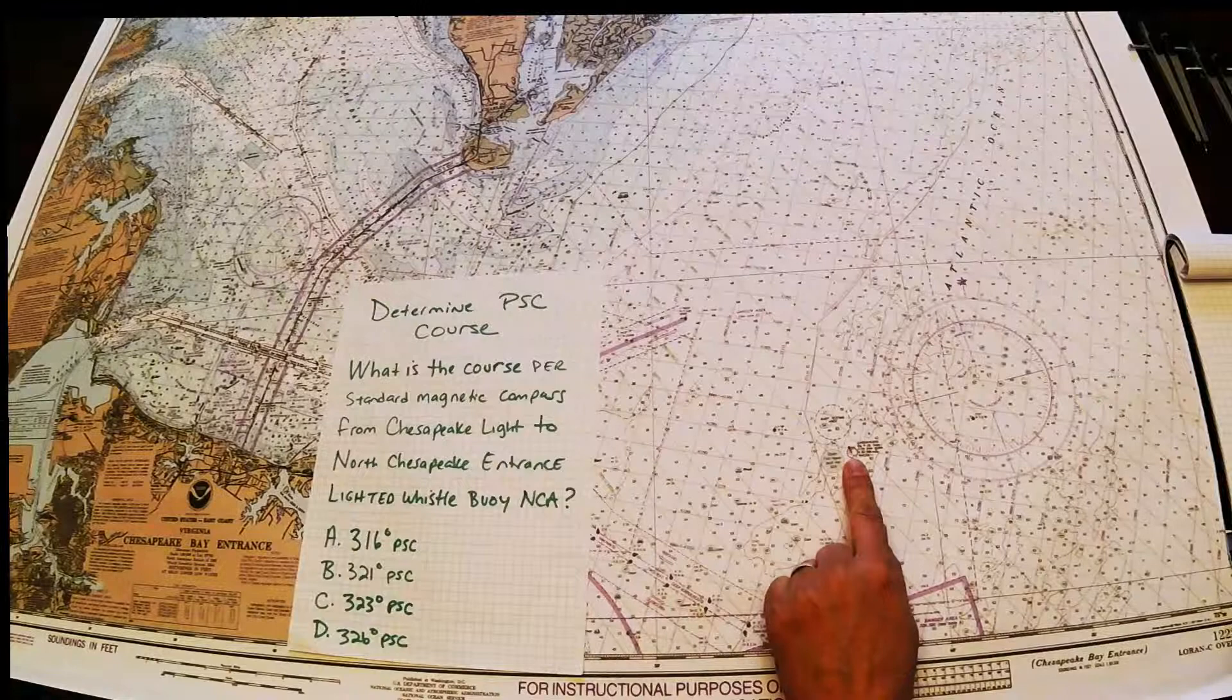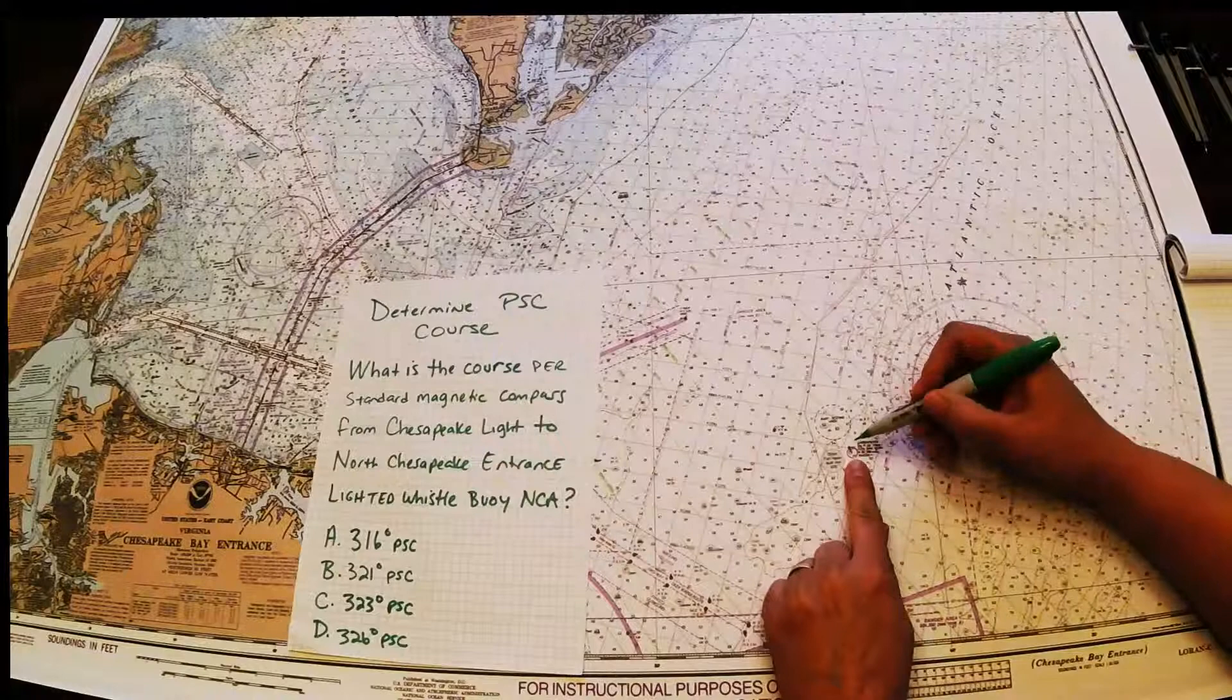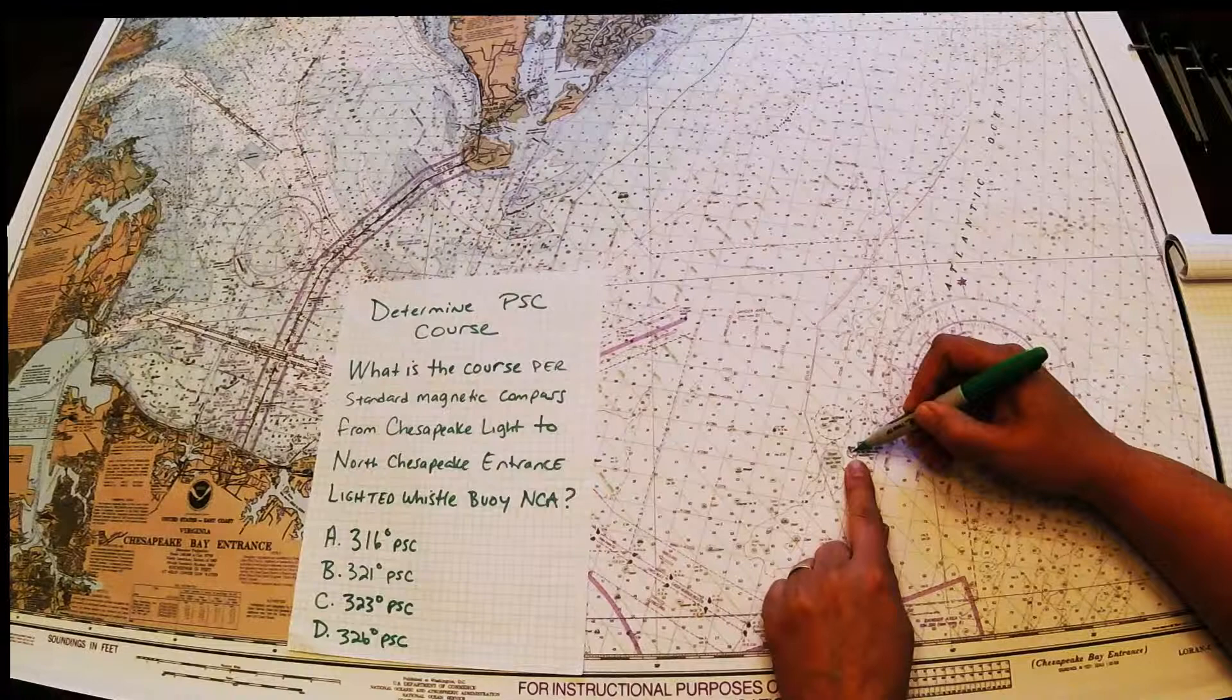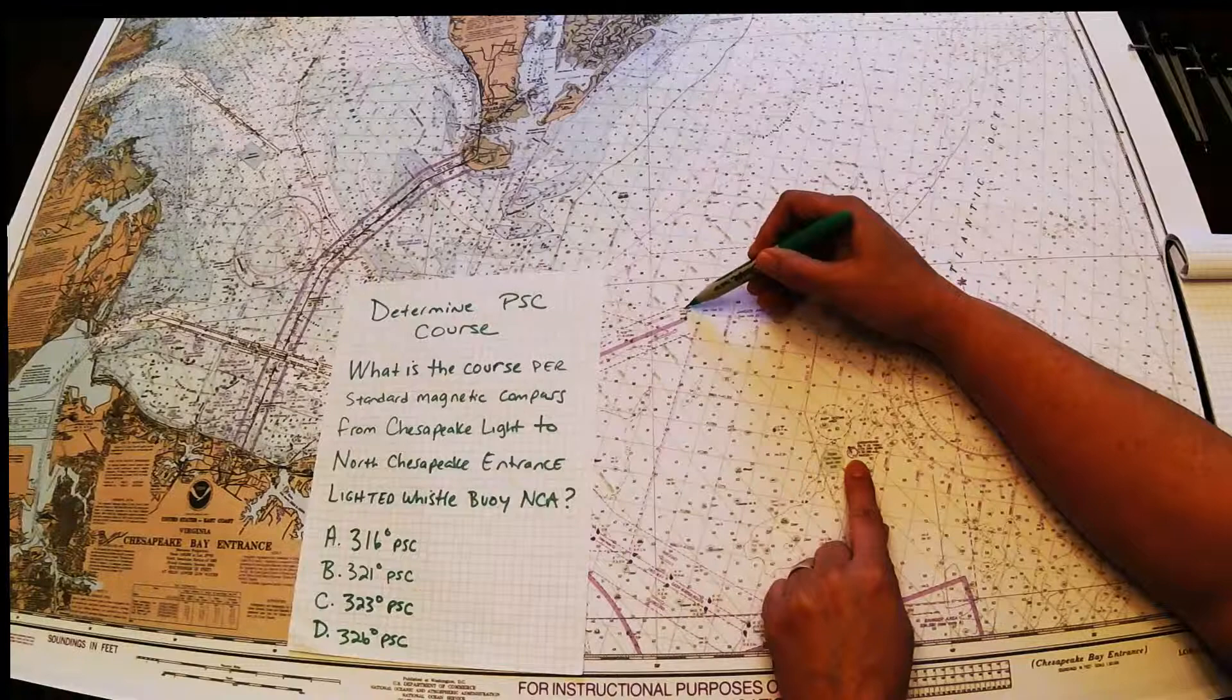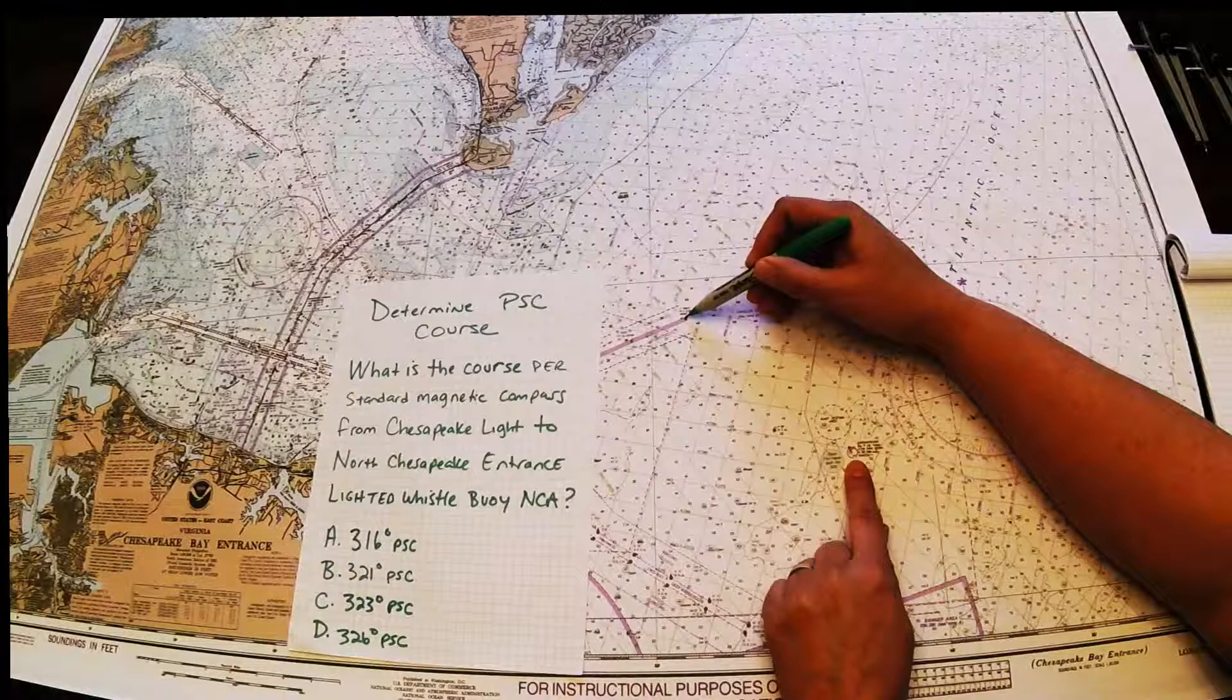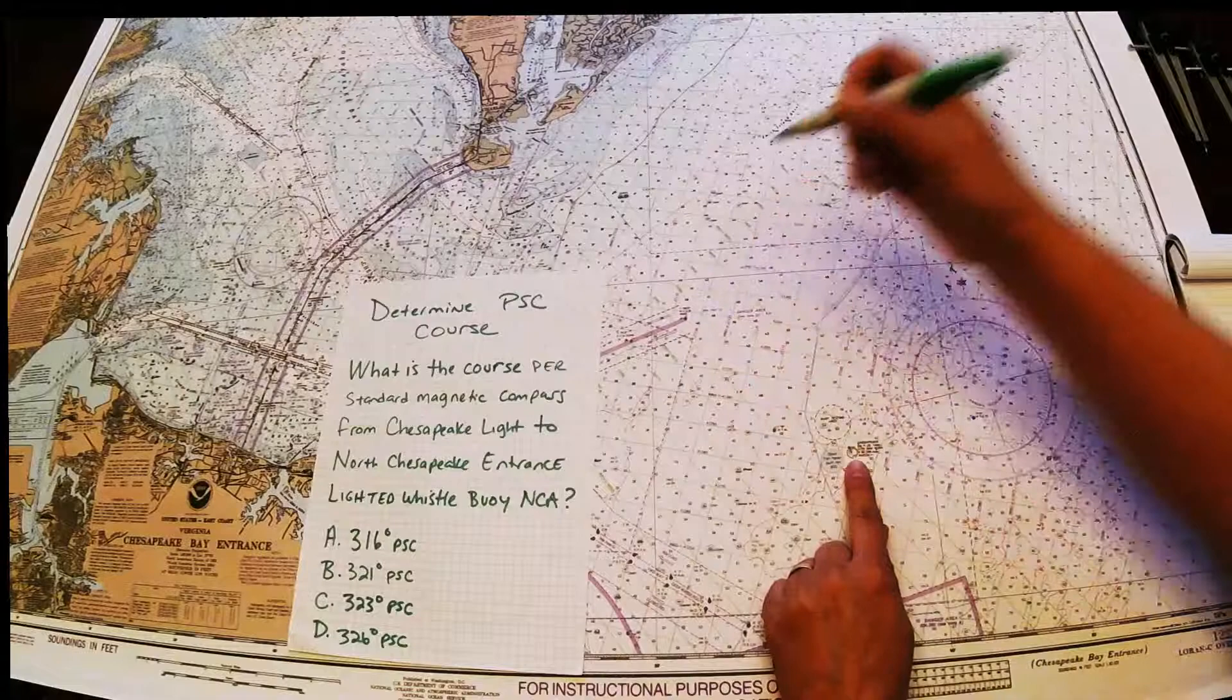When we look at Chesapeake Light, we know that it's a light symbol because it has a black dot with a magenta teardrop. It's not a buoy, it's a light. The location of the light is where the black dot is. The other aid they're asking about is the NCA buoy, NCA lighted, which has the magenta circle around it and it says whistle. If you don't know where this is, make sure you look in the light list.